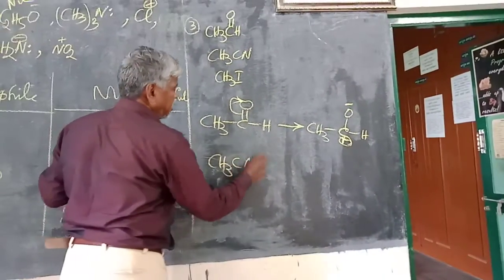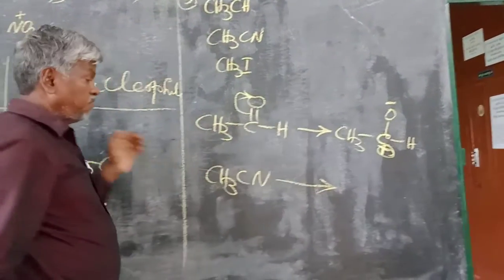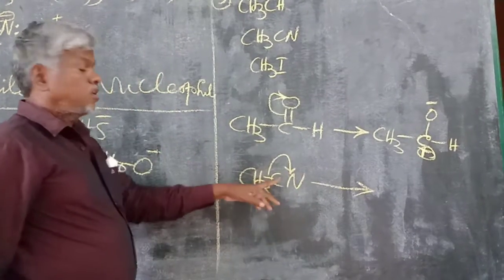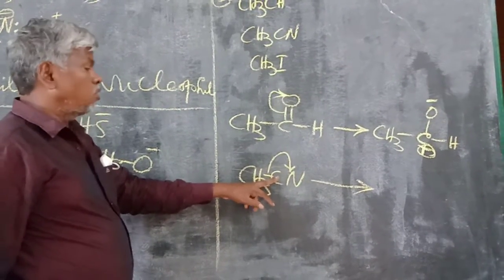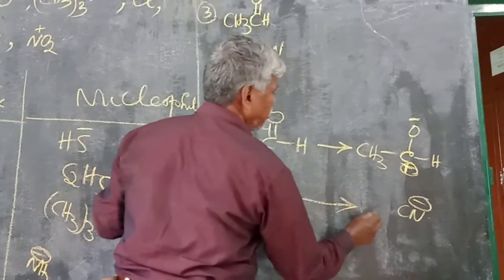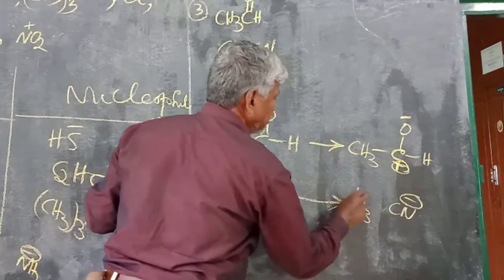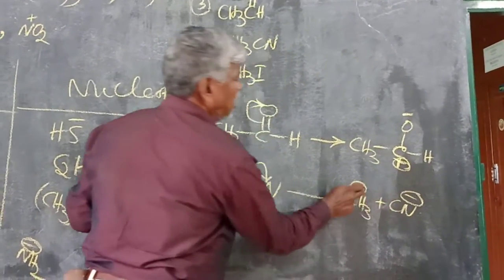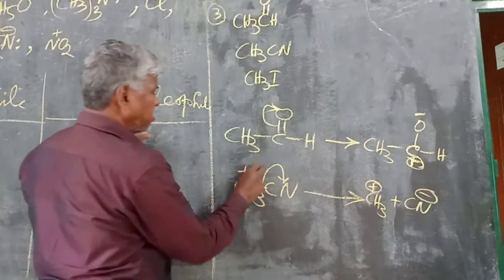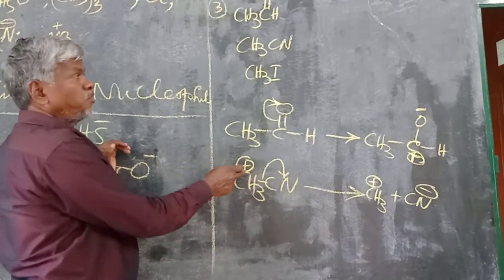Second, CH3CN. As we know, the cyanide group is the electron-withdrawing group. The cyanide gets a minus charge and the CH3 gets positive charge. This is the electrophilic center.